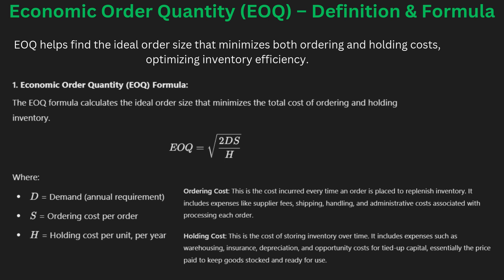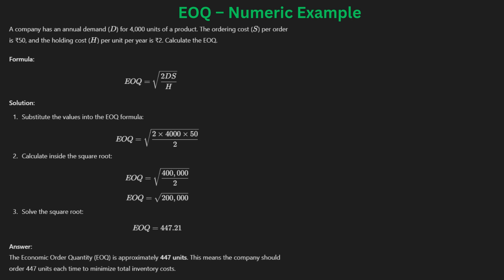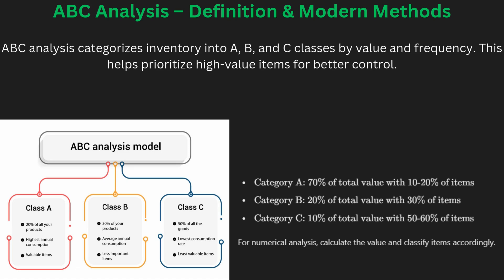Wilson's inventory model helps determine the best order size that minimizes total inventory cost. It factors in demand rate, ordering cost, and holding cost to find the most cost-effective order quantity. By following Wilson's model, companies can avoid overstocking and reduce the risk of stockout. The model is particularly helpful for products with steady demand, though it does not account for sudden changes in demand.